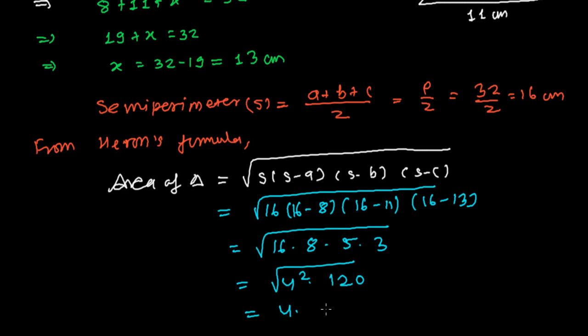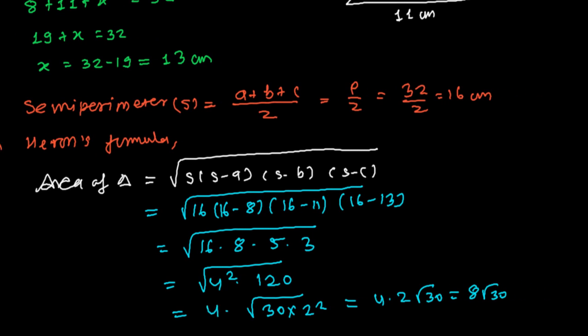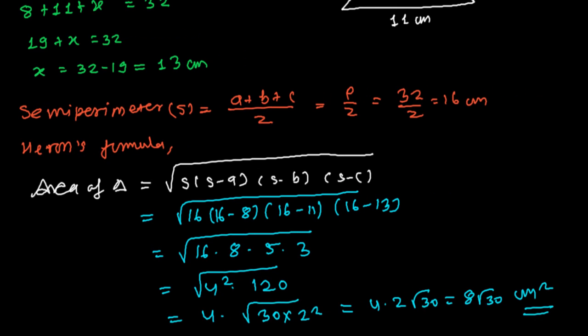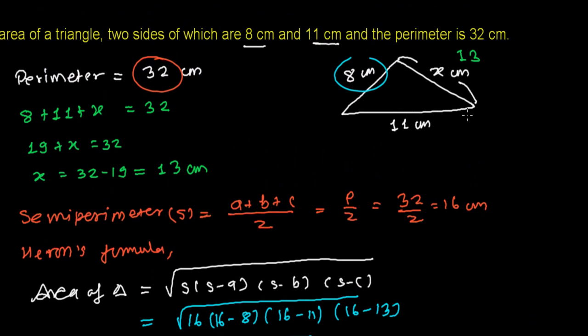So further, I will get 4 times 2 under root 30. And that's going to be 4 times 2, that is 8 root 30 centimeter square. So that's our area of the triangle, 8 root 30 centimeter square. So the area of this is 8 root 30 centimeter square.